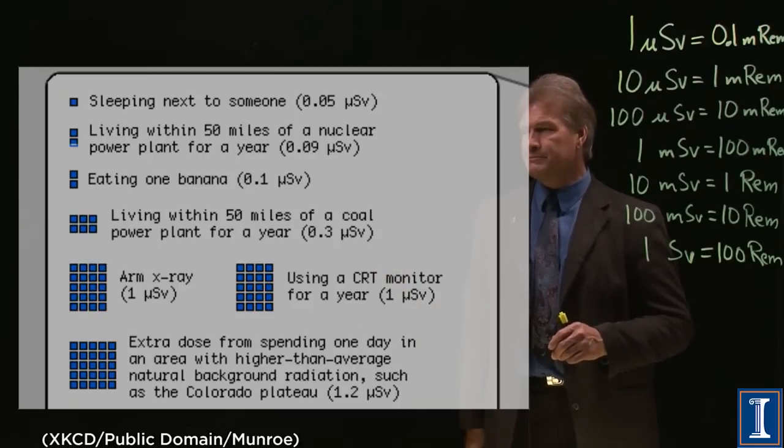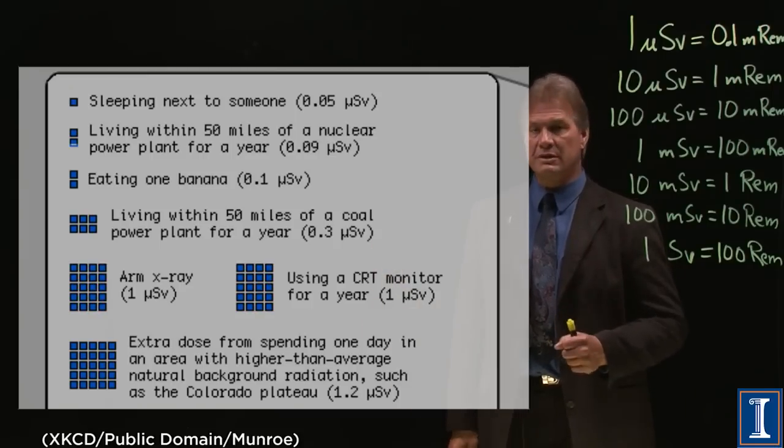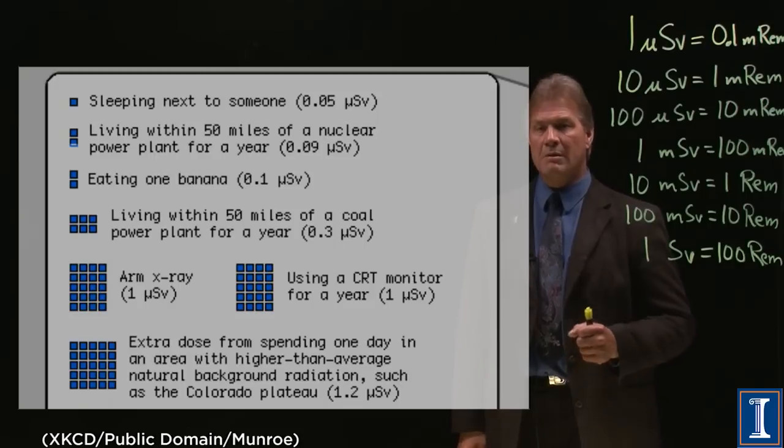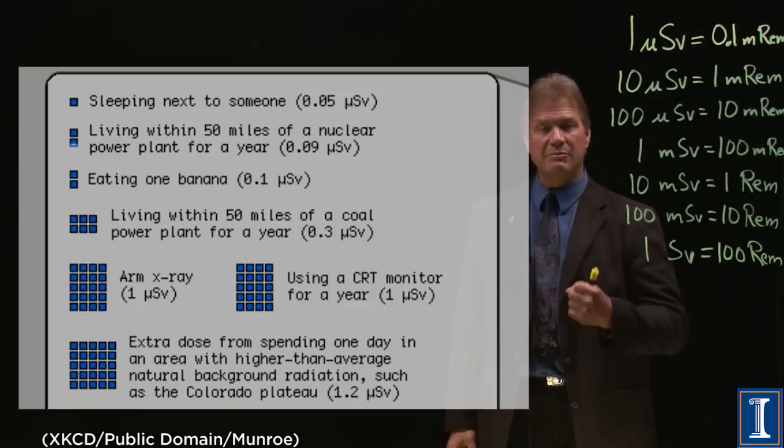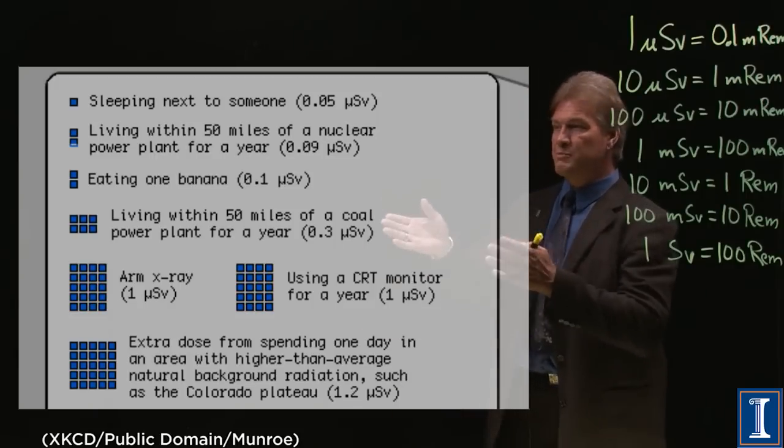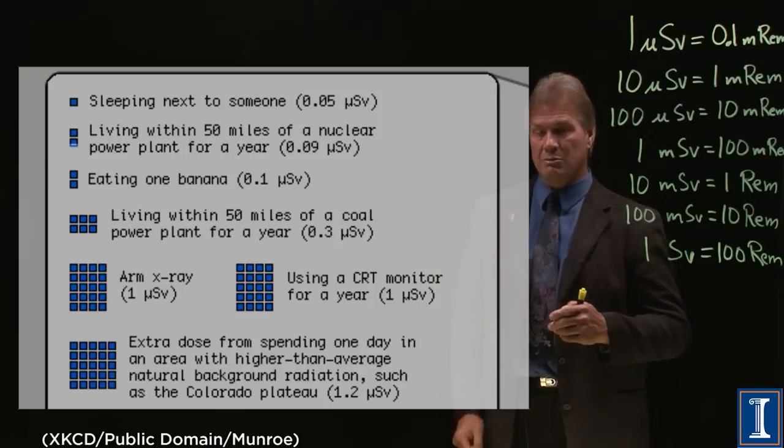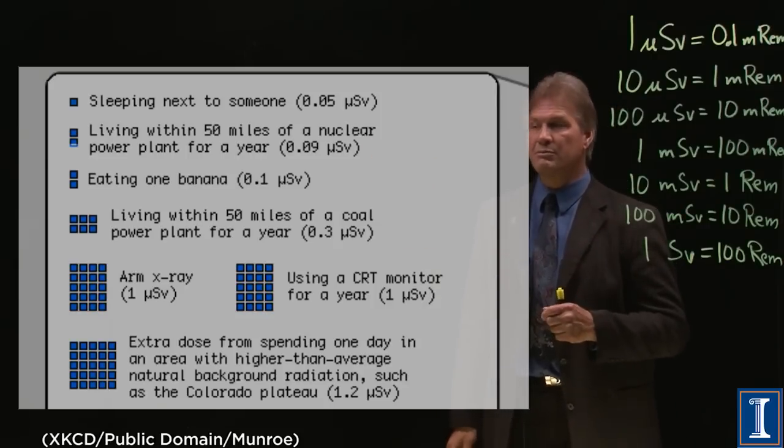Eating a banana. 0.1 microsieverts, a hundredth of a millirem. Bananas are loaded with potassium. They're good for you. Don't despair just because there is a noticeable or at least measurable radiation dose.